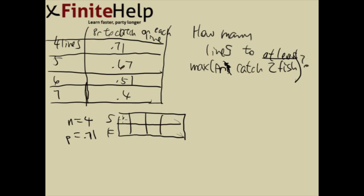We have 0, 1, 2, 3, and 4 success. We have 4, 3, 2, 1, 0 failures. Here we want at least 2 fish. So at least 2 success. Here's at least 2, here's at least 2, here's at least 2. 1 is not at least 2, and 0 is not at least 2.